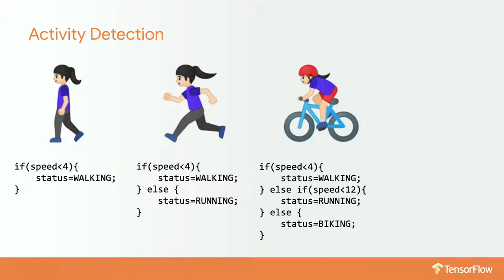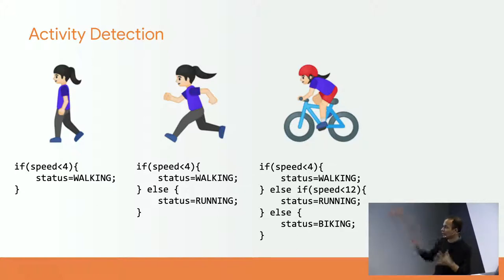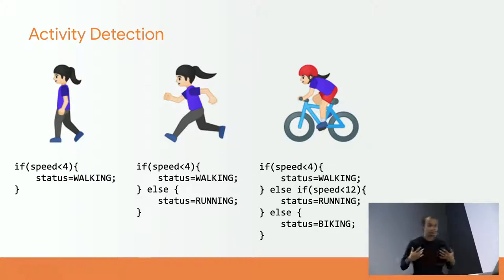When you talk about machine learning, you need to understand whether you actually need it. When a customer says they want machine learning for a simple problem — in general, you don't use machine learning when you can solve a problem with rules. For example, if I have a Fitbit or Apple Watch monitoring my steps, and I say if speed is less than four kilometers per hour I'm walking, and between four and something else I'm running — if I can make it into rules, then you generally never go into machine learning, because this will work 99% of the time and is more explainable.